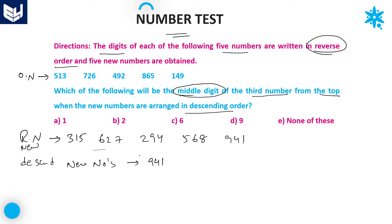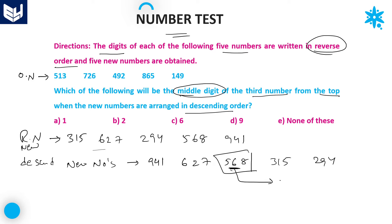The largest number among these 5 new numbers is 941. After that 627, then 568, then 315, and the least number is 294. That is the descending order of the new numbers. The third number from the top is 568, and the middle digit of 568 is 6. So 6 is the middle digit of the third number from the top. Option C is the right answer.